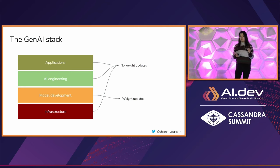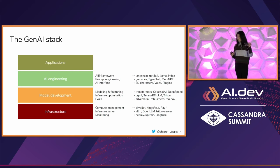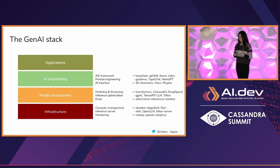For most of the layers you don't really need to know a lot about machine learning. The one exception is model development, where you actually deal with model weights. For infrastructure, some of the categories are compute management — like SkyPilot, Higgsfield, or Ray — plus inference server monitoring. For model development, you have modeling and fine-tuning, and inference optimizations like GGML, TensorRT, or Triton. At the AI engineering level, you see frameworks like LangChain, GPT4All, and LlamaIndex.